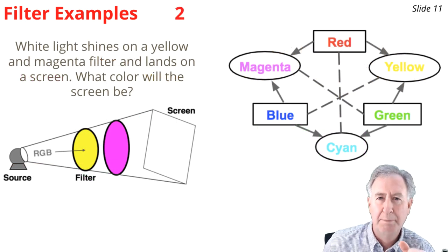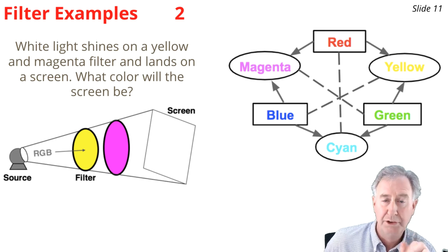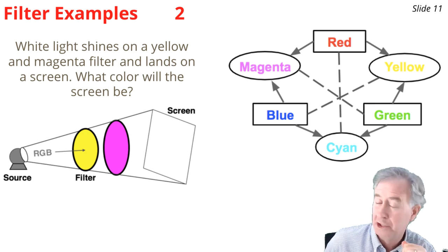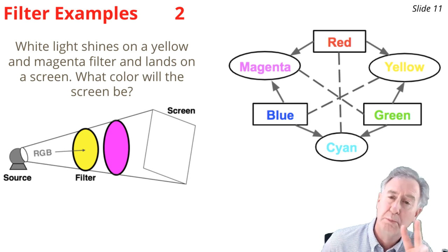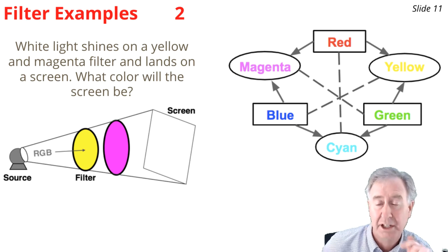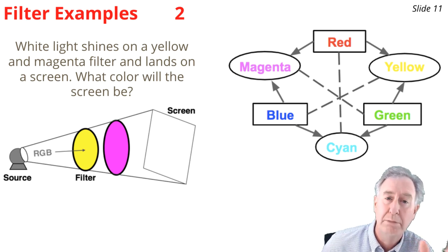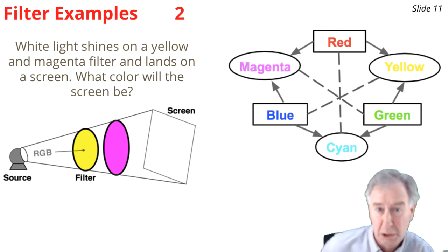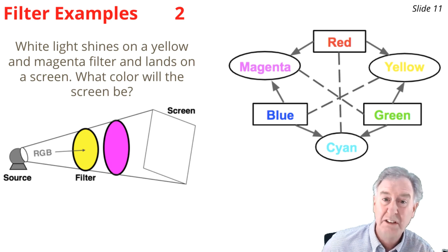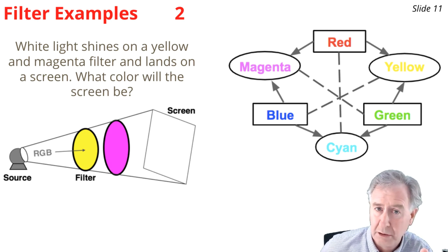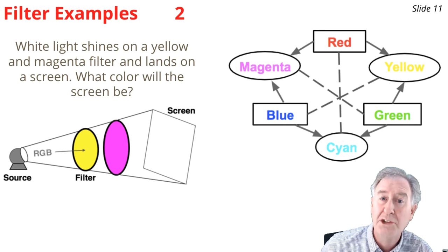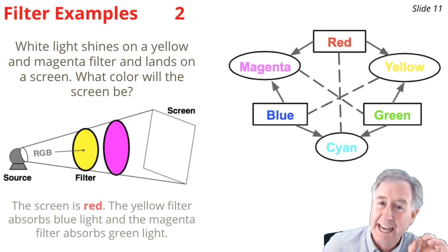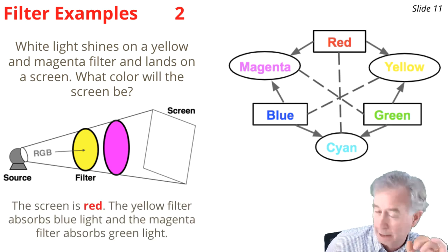Here's another example: white light shines on two filters — one yellow and one magenta — and we ask what color the screen will appear. We start with red, green, and blue. The yellow filter takes away the blue. The magenta filter absorbs the green. Only one color remains — red — which lands on the screen, making it appear red.